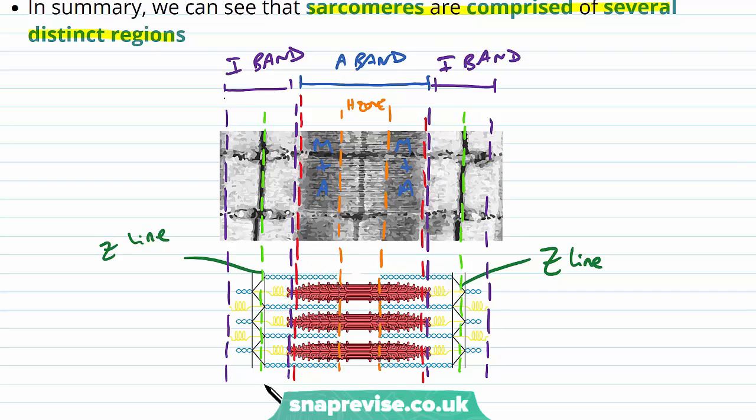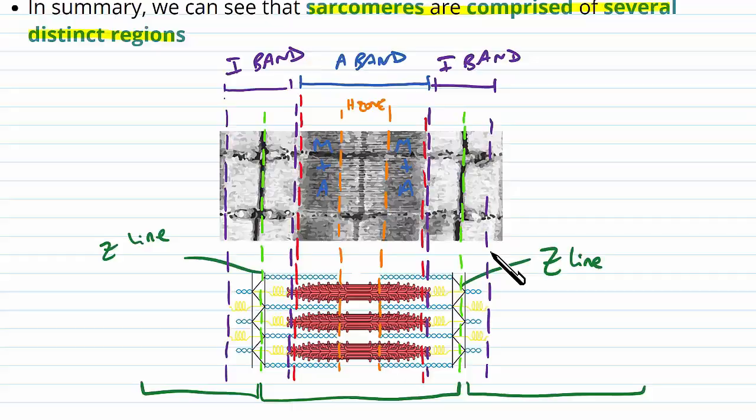And then this is one sarcomere therefore, between Z line to Z line. The next sarcomere would be the next one, either side. So hopefully that gives you a general structure of what the sarcomere is. These units, which control the contraction of the muscle, as they all work together and in sync.